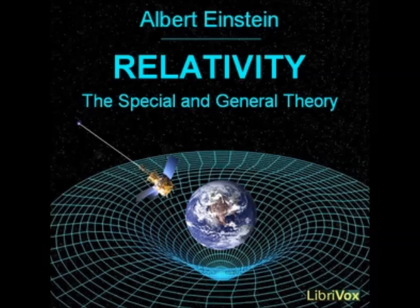But a larger number, whereas, of course, for a disk which is at rest with respect to K, this operation would yield pi exactly. This proves that the propositions of Euclidean geometry cannot hold exactly on the rotating disk, nor in general in a gravitational field, at least if we attribute the length 1 to the rod in all positions in every orientation. Hence, the idea of a straight line also loses its meaning.